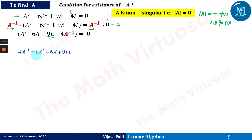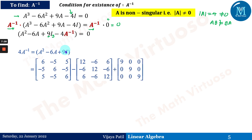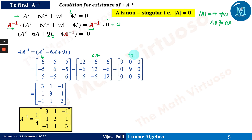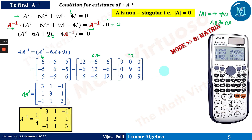Rearranging, we get 4A⁻¹ = A² - 6A + 9I. Substituting the computed values of A², 6A, and 9I, we get the result. Therefore A⁻¹ = (1/4)(A² - 6A + 9I). You can cross-check this using the matrix mode on your calculator to verify the answer directly.